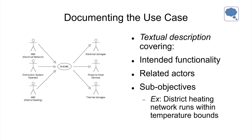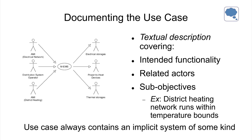To document the use case, the PRECISE approach provides a template with several textual description forms covering intended functionality, related actors, and sub-objectives. For example, if you describe a use case involving a district heating network, part of your sub-objectives might be that the network runs within temperature bounds — so you don't get boiling or freezing water in the pipes. A use case always contains an implicit system — there's always something behind it doing something. Describing that system is exactly the topic of the next presenter.